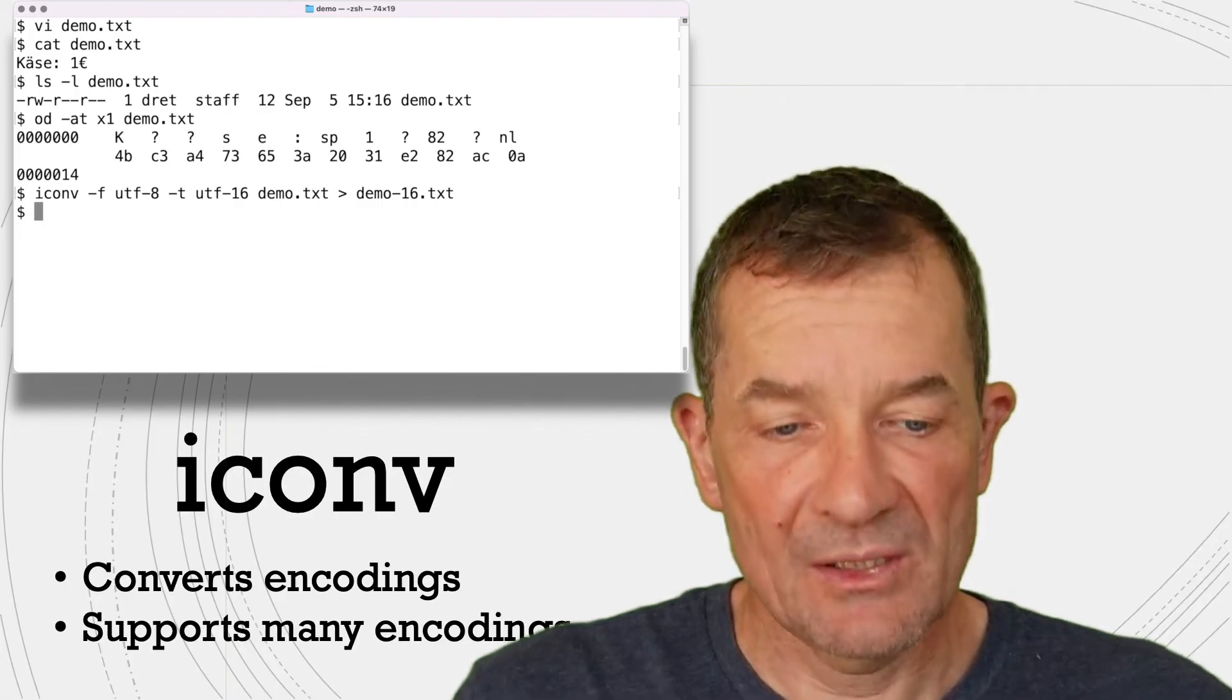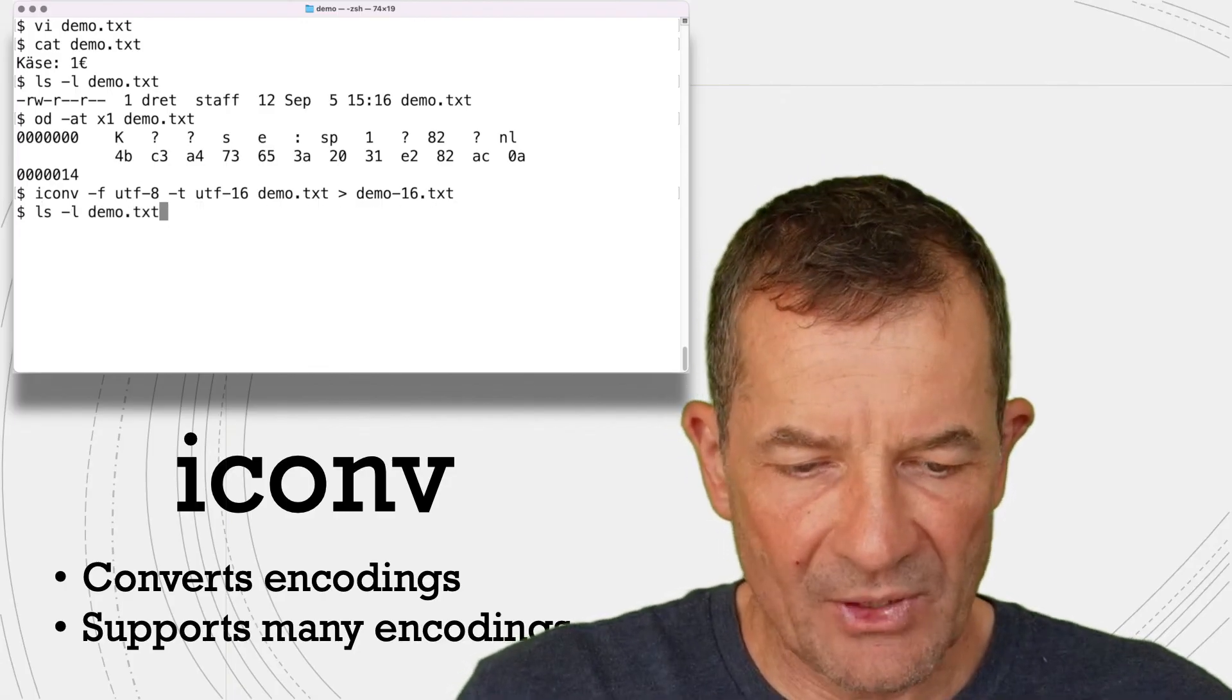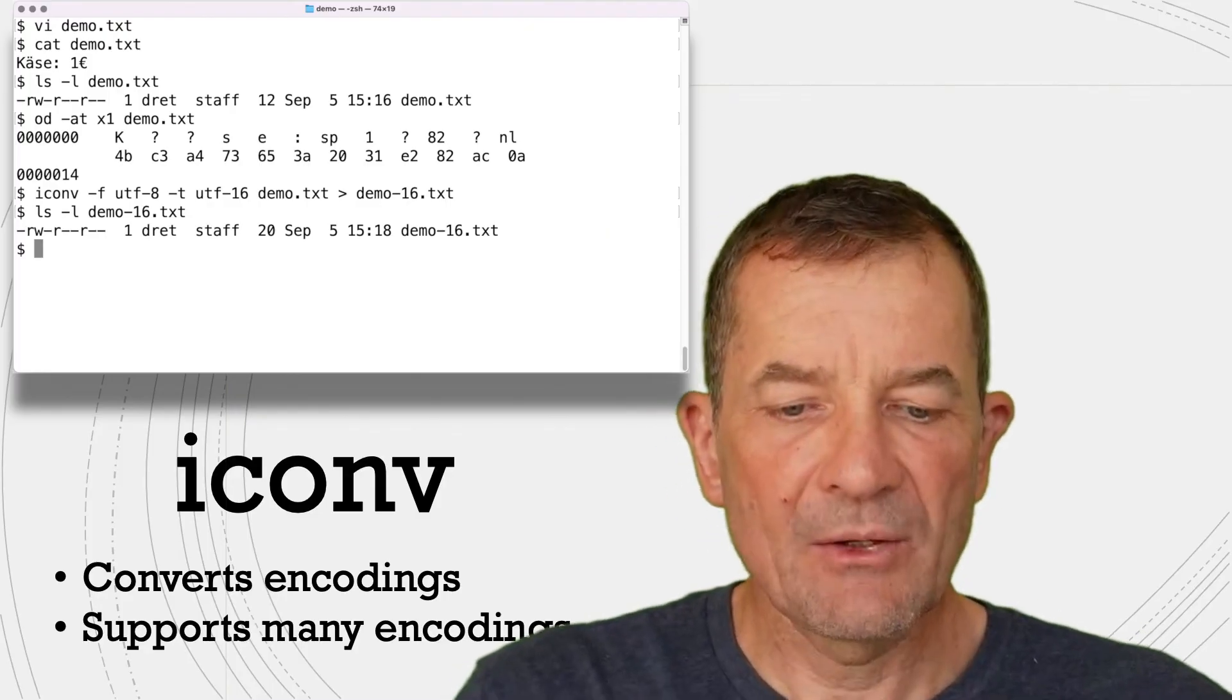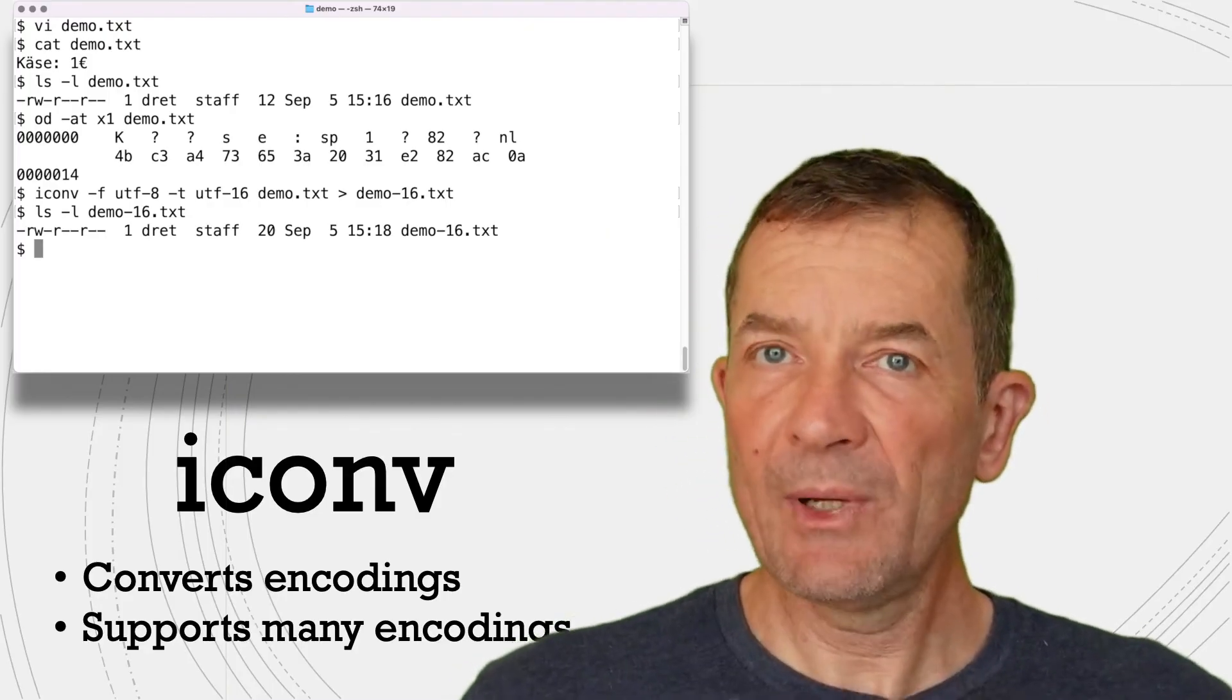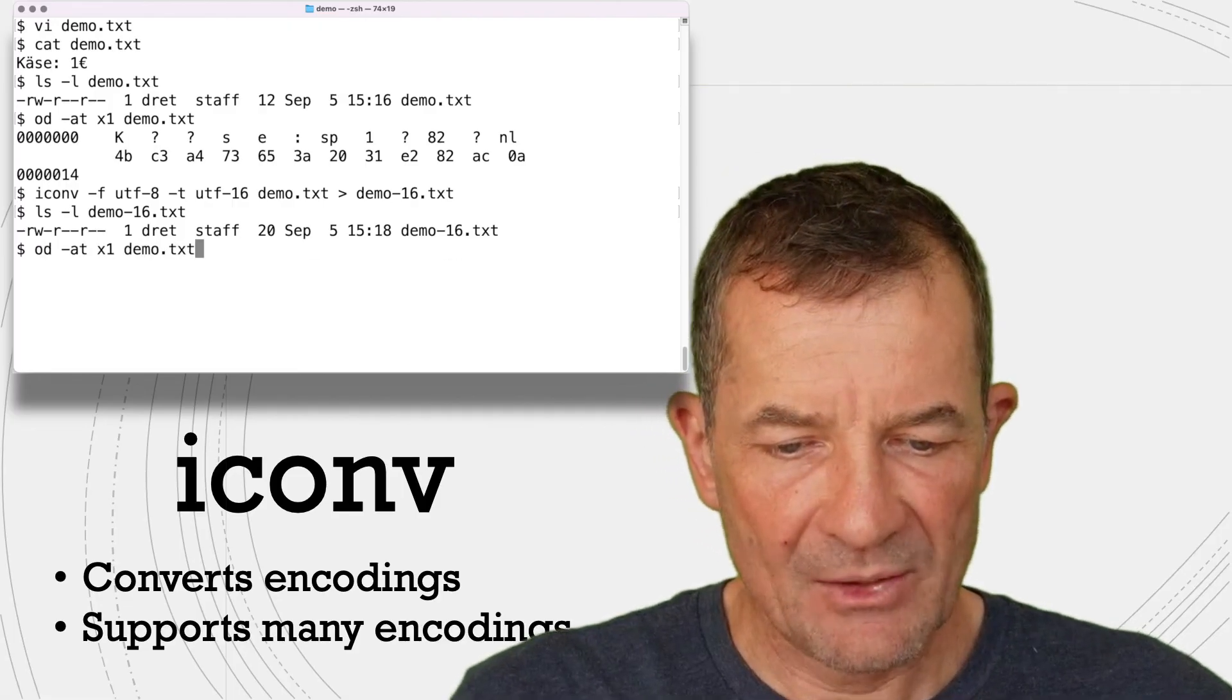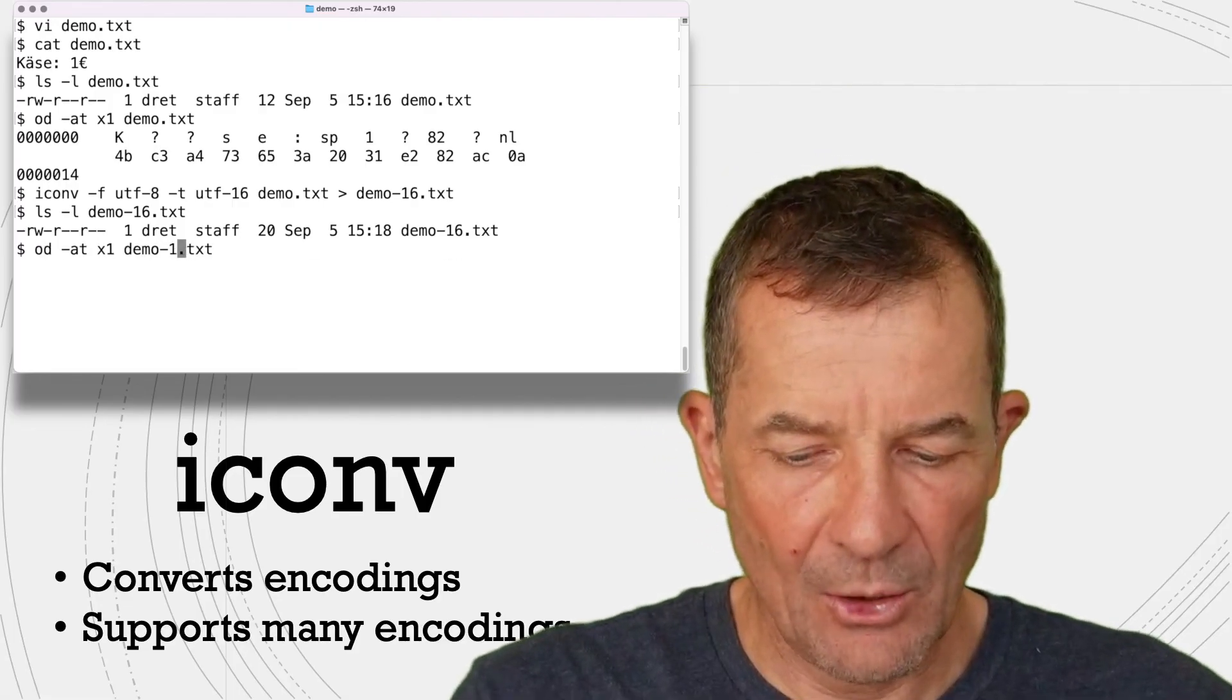And now let's see what this looks like. So we'll do the same thing. We'll look at it in the file system. And then when you look at this here, what you can see, it has 20 bytes. So it's already quite a bit bigger. Now let's look at it with our od utility.